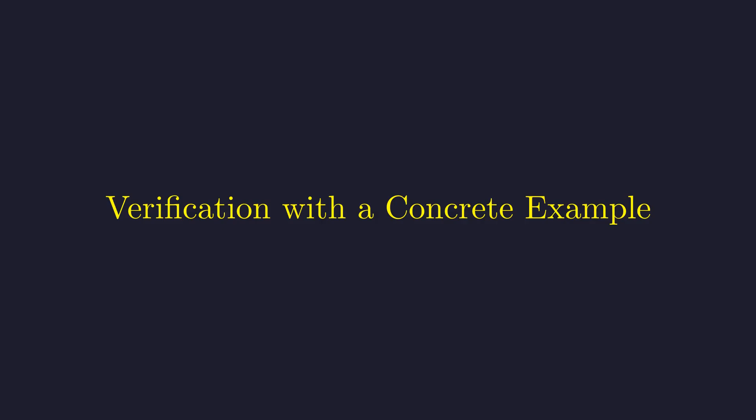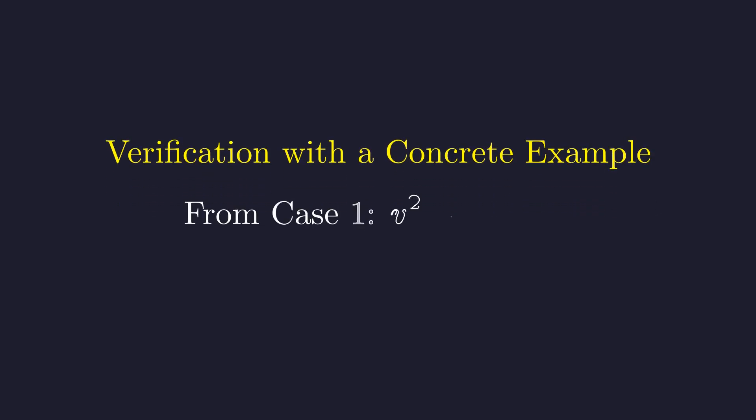We have therefore shown that the original expression must be the square of an integer. To make the proof concrete, we will find the smallest positive integer n that satisfies the initial condition and verify our result. The condition from Case 1 was that v² minus 7u² equals 1. This is a Pell's equation. To find its fundamental solution, we can test small integer values for u.